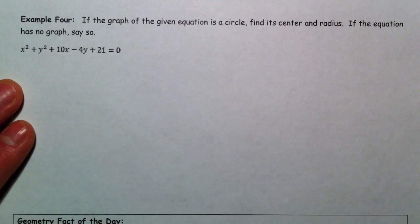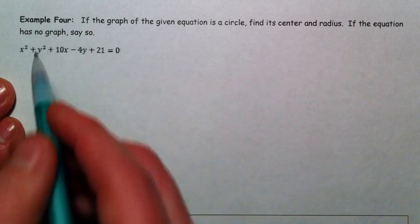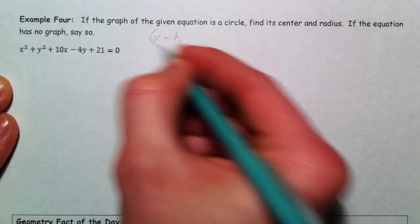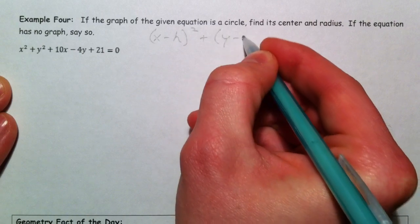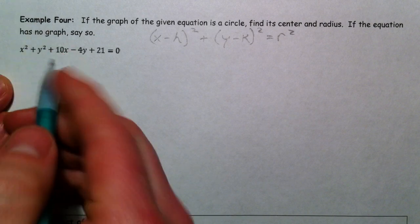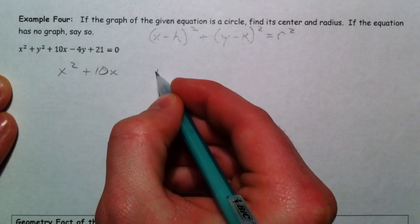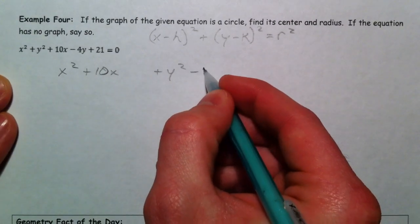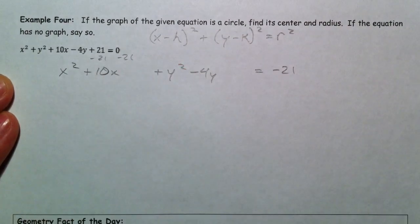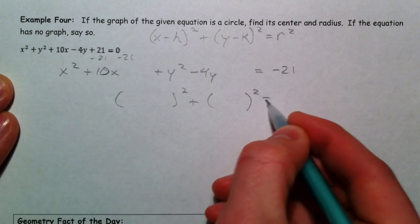So, if the graph of the equation of a given equation is a circle, find its center and its radius. If the equation has no graph say so. Alright. So we have an x squared and a y squared in it. We want to make it look like this. And so we're going to have to complete the square twice. So I'm going to group the x's and the y's. x squared plus 10x. And then I'm going to leave some space because I'm going to complete the square. y squared minus 4y. And then I'm going to subtract the 21 over to the other side.